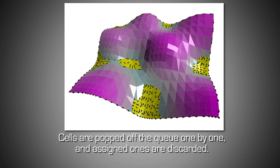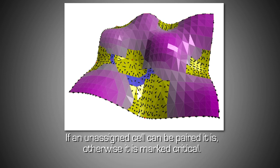Cells are popped off the queue one by one, and assigned ones are discarded. If an unassigned cell can be paired it is, otherwise it is marked critical.